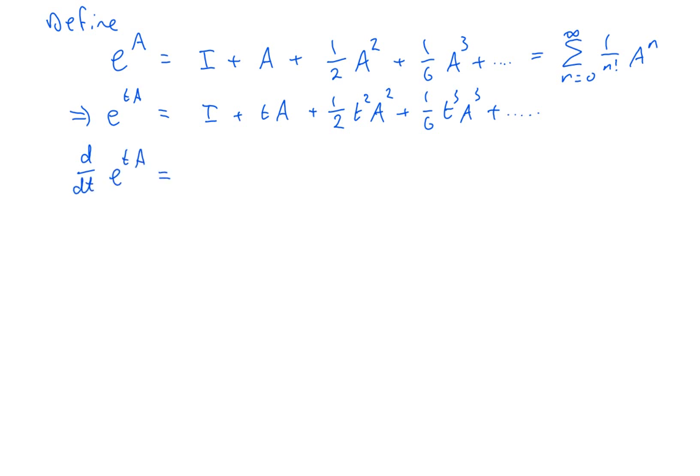I would get, well the derivative of I with respect to t would be zero, it doesn't depend on t, it would have to be A, the derivative of (1/2)t² is t, the derivative of (1/6)t³ is (1/2)t². You see that is in fact equal to A times (I + tA + (1/2)t²A² + ...). I'm just getting the formula for the exponential again. In other words, that is A times e^(tA).